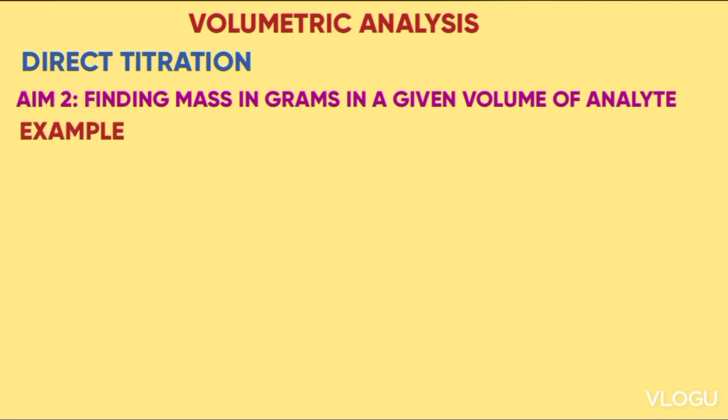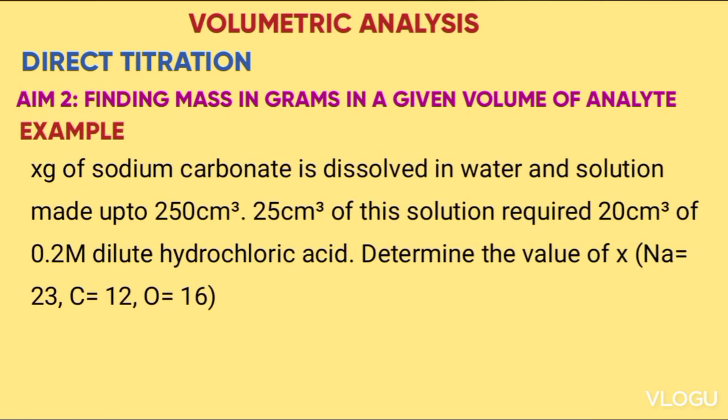Example: X grams of sodium carbonate is dissolved in water and solution made up to 250 cm³. 25 cm³ of this solution required 20 cm³ of 0.2 molar dilute hydrochloric acid. Determine the value of X. Na=23, C=12, O=16.